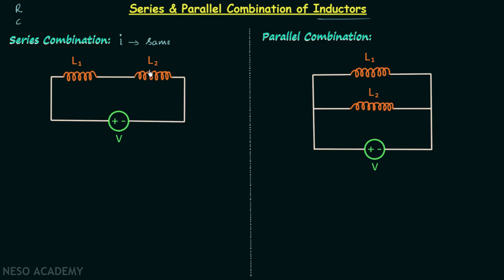For example, in this circuit we have two inductors connected one after another in the same wire, and therefore the current through both the inductors will remain the same. Let's say the current in this circuit is equal to i. We know the voltage across an inductor is equal to the inductance of the inductor multiplied by the time rate of change of current through the inductor, that is di by dt.